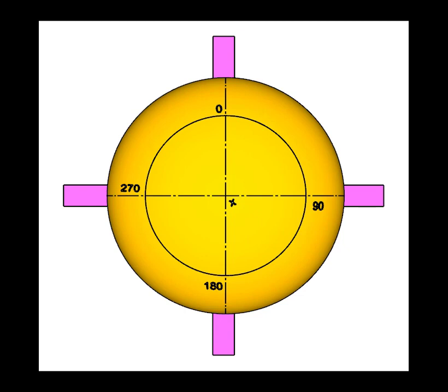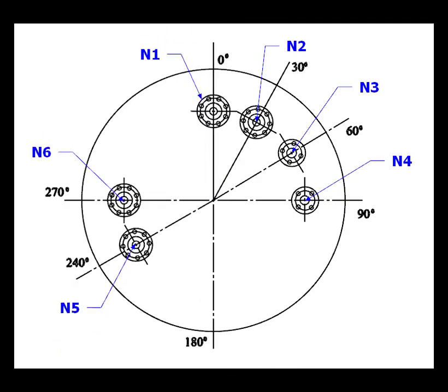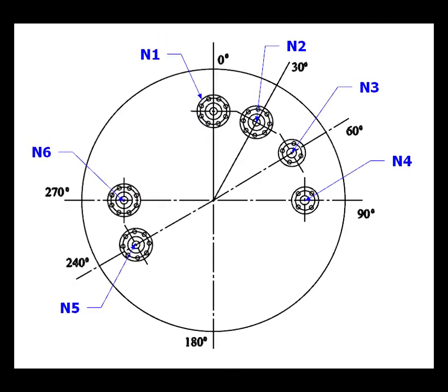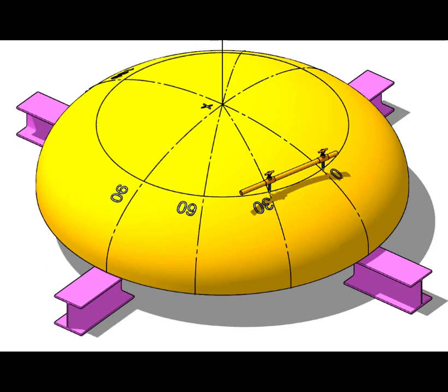Let us mark the centers of nozzles two and three. Divide the 0 to 90 degree quarter to three equal parts, you will have three sections of 30 degrees.